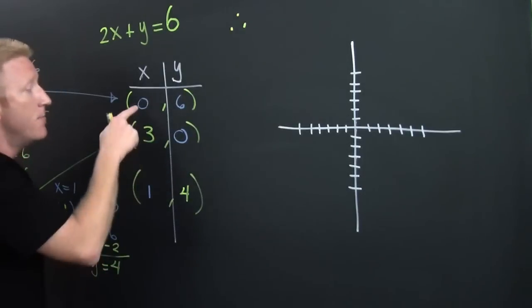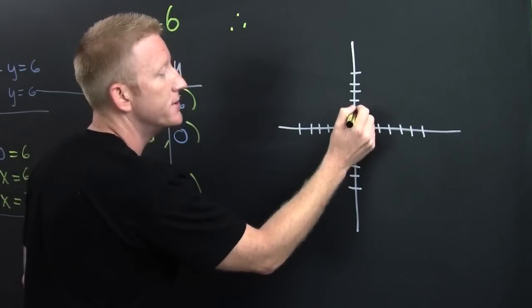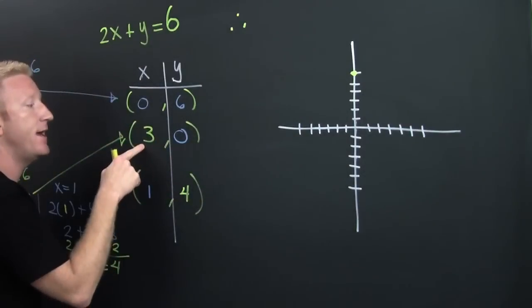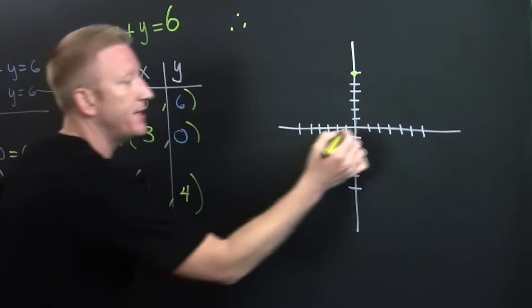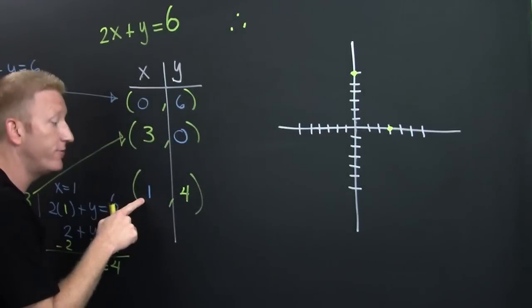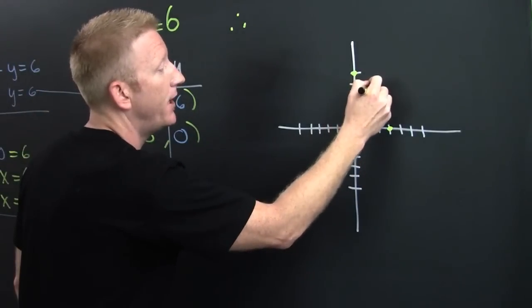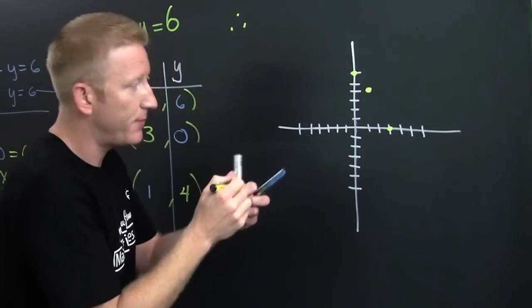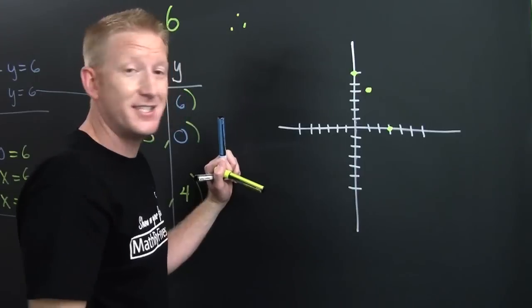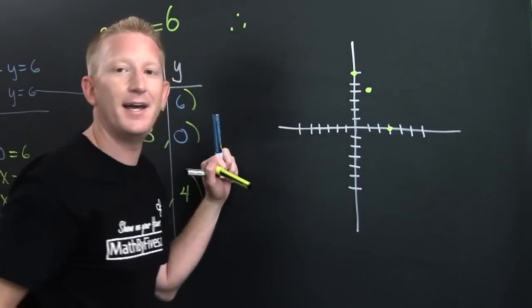Let's see if we need to check our work. My first point is (0, 6) — that's zero in the X direction, up one two three four five six. Then (3, 0) — three in the X direction, up zero. And our checkpoint, (1, 4) — one four, boom. Even without graph paper, it looks like they all lie on a straight line.